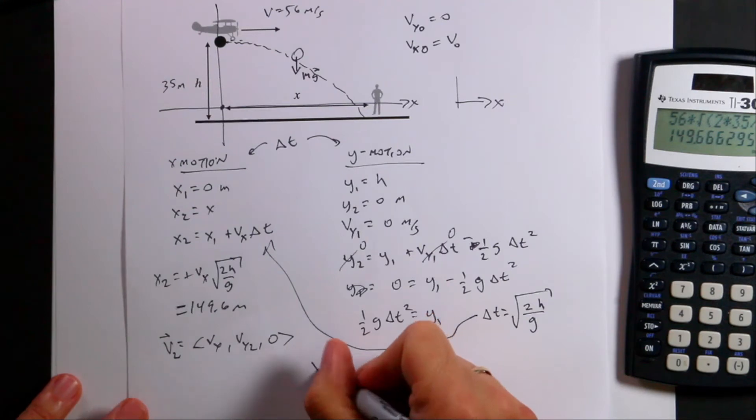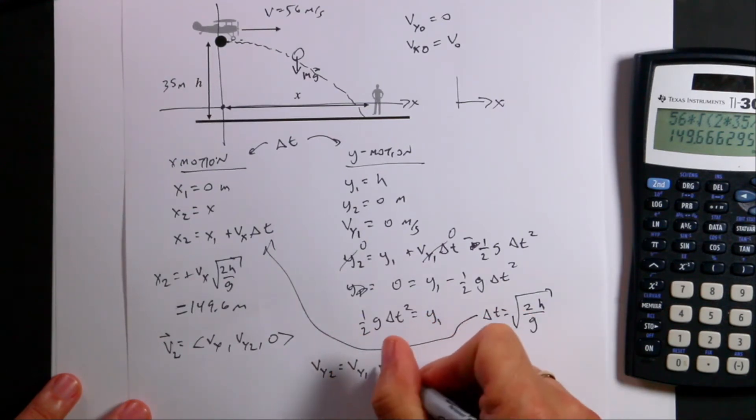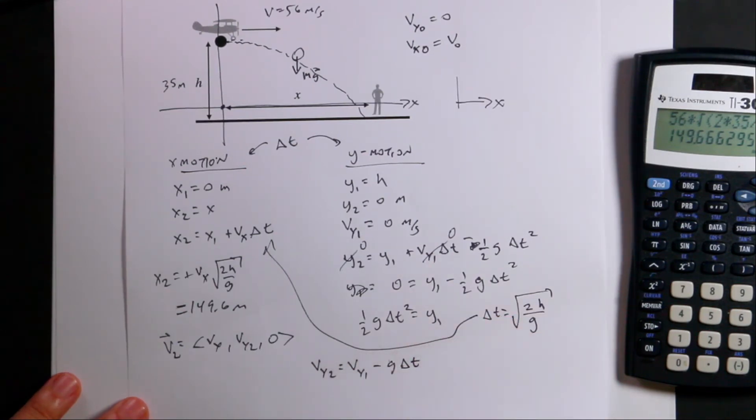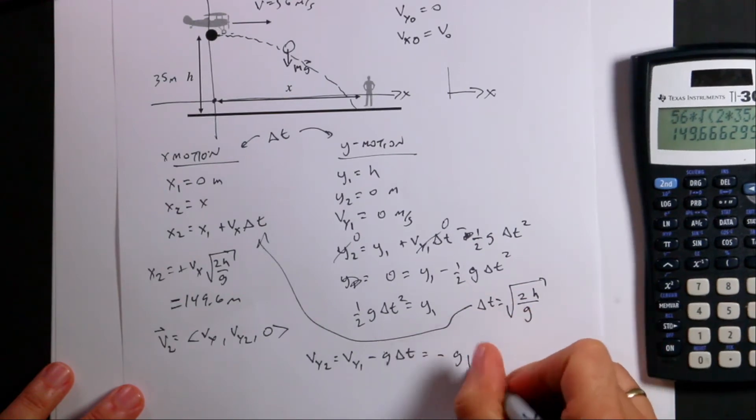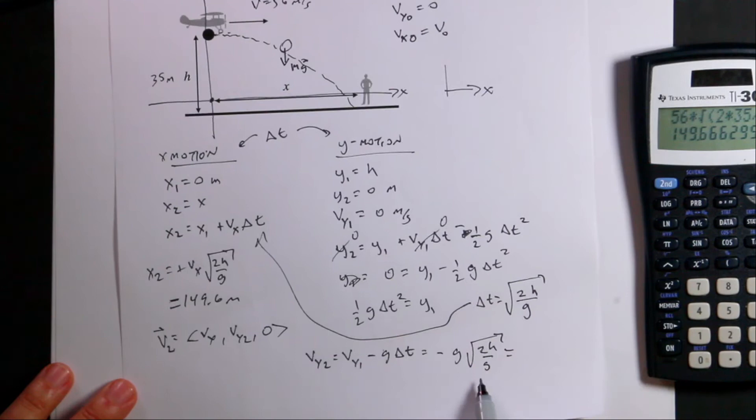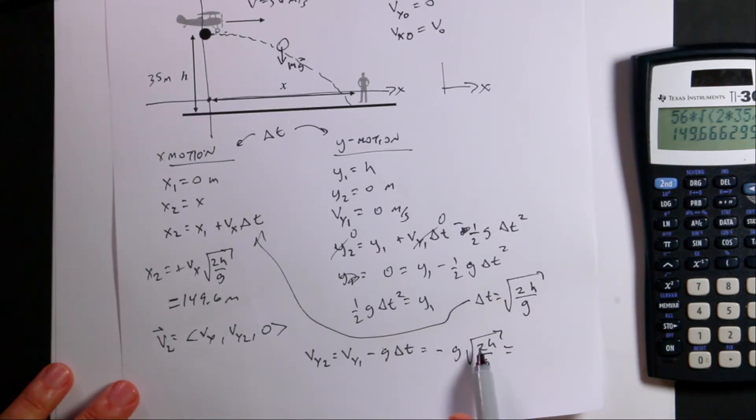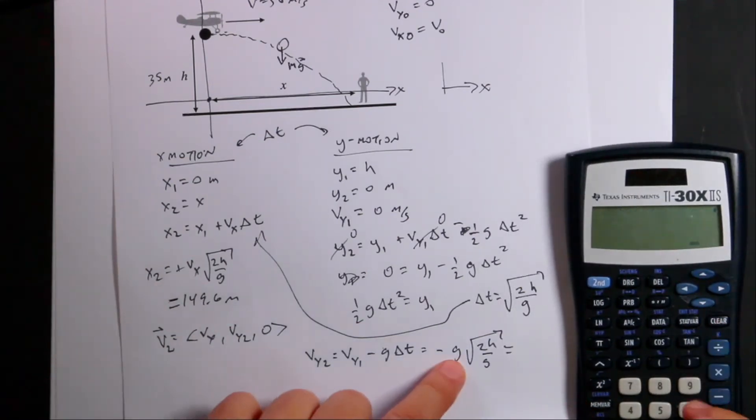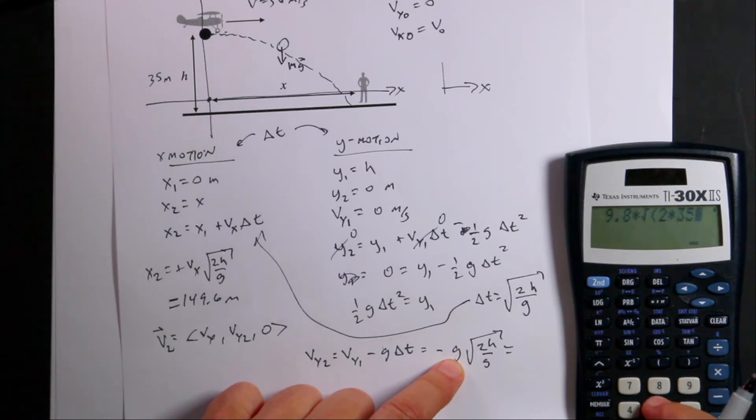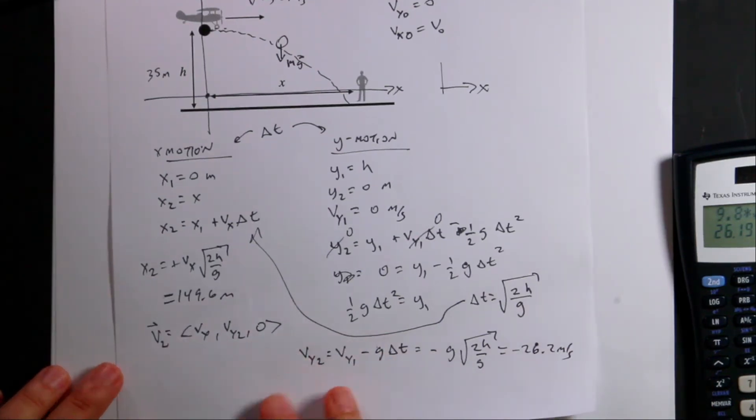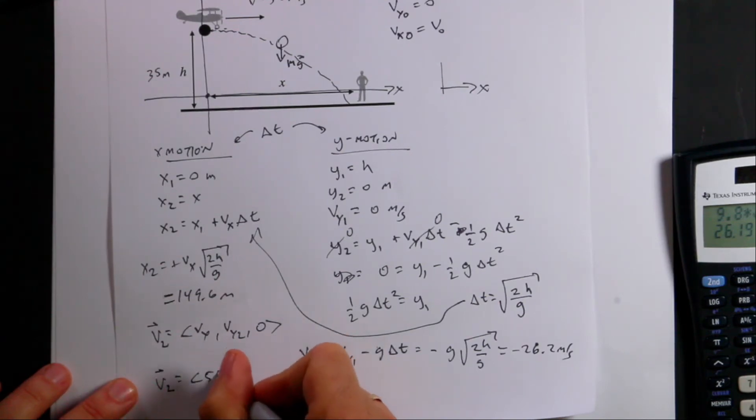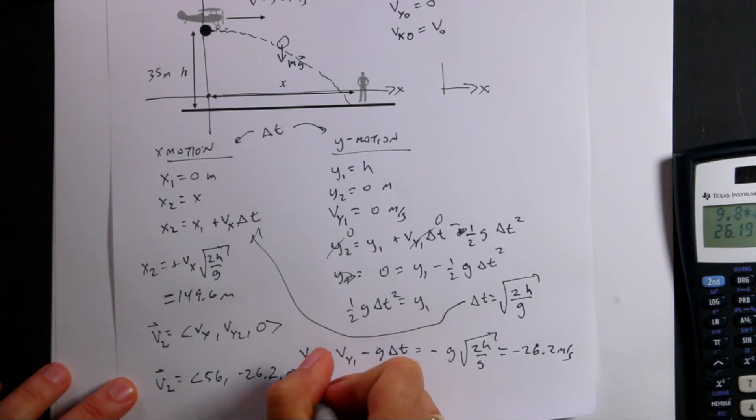So the y component I can get from the following kinematic equation. Vy2 equals Vy1 minus g delta t. That comes from the definition of the acceleration, which is negative g. Well, I already know t and I already know g. So this is just going to be negative g times the square root of 2h over g. And you can put in, you can cancel that if you want to. You'll be the g on the top. But I don't really care. So let's just put that in right here. And I'll say g of 9.8 times square root 2 times 35 divided by 9.8 equals negative 26.1. 26.2. So that's my total velocity. V2, right before it hits the ground, is going to be 56, negative 26.2, 0 meters per second.